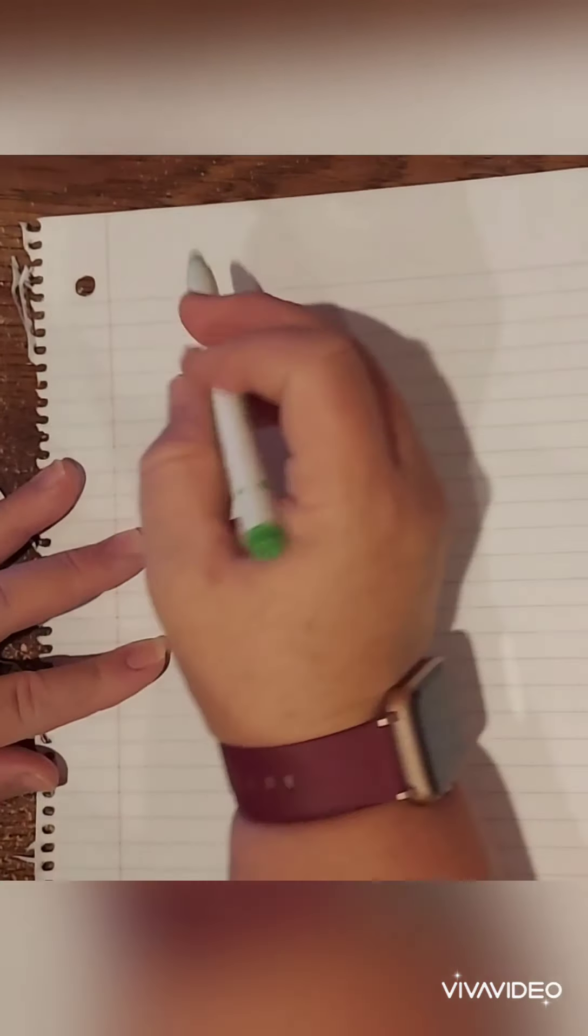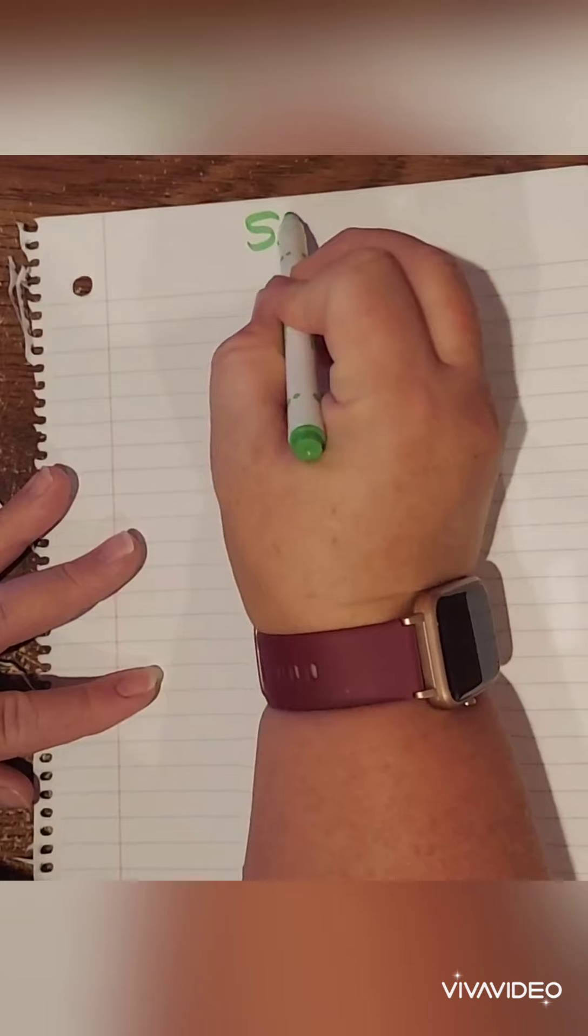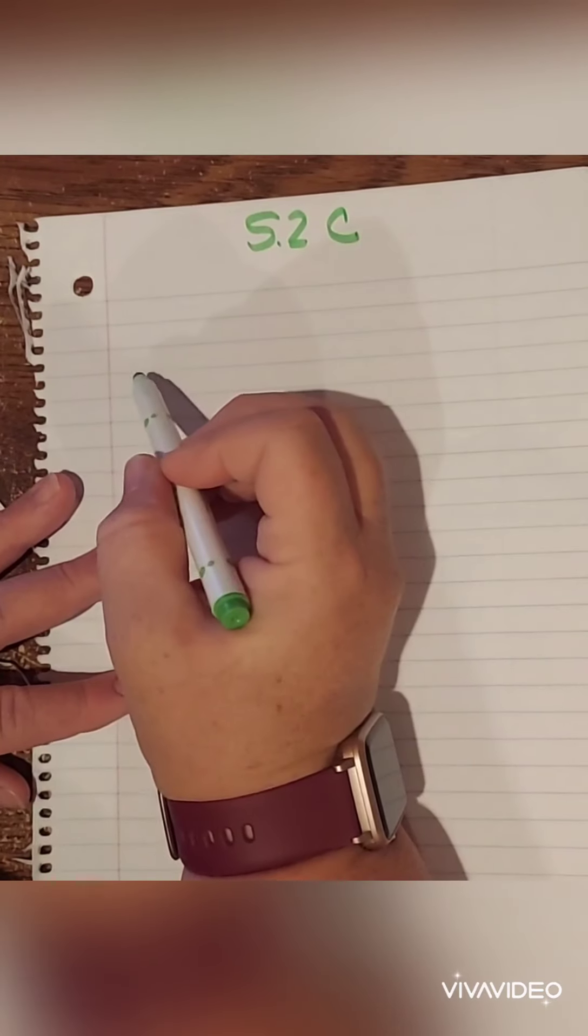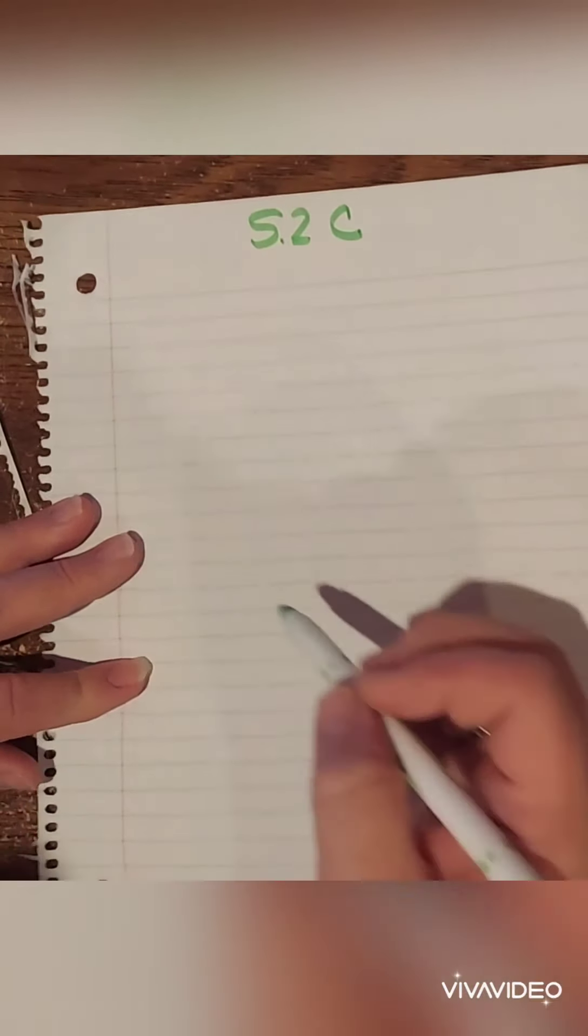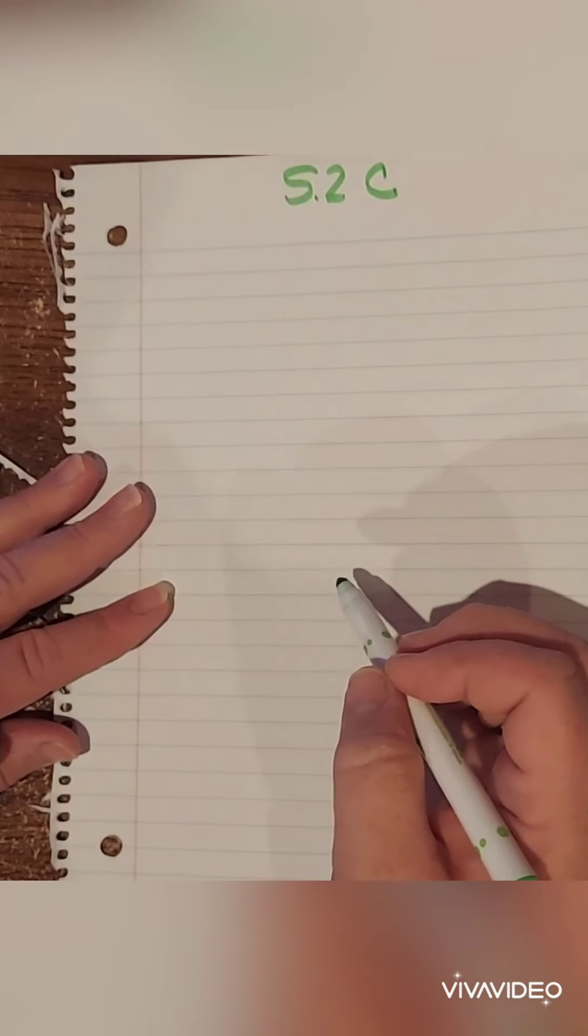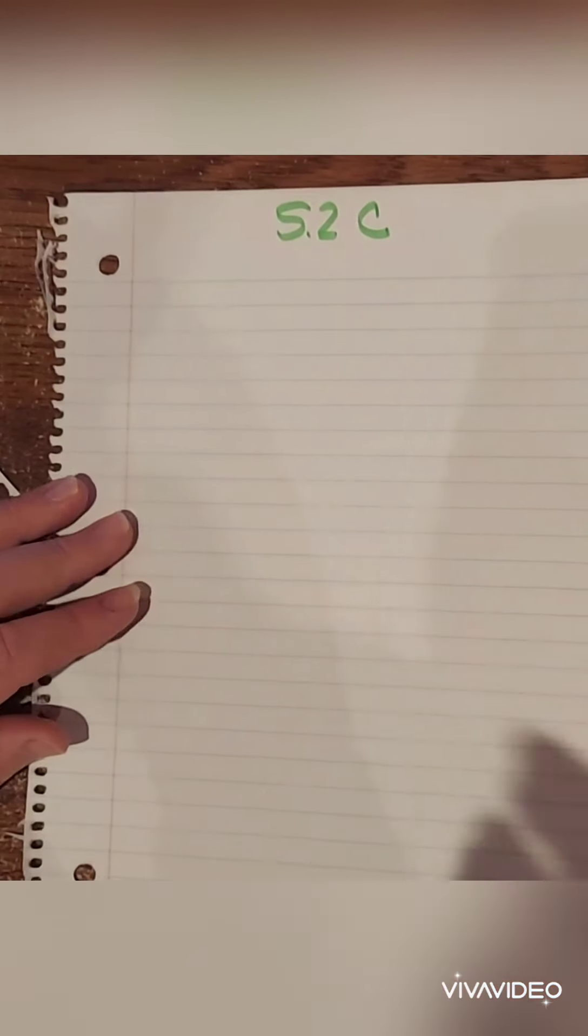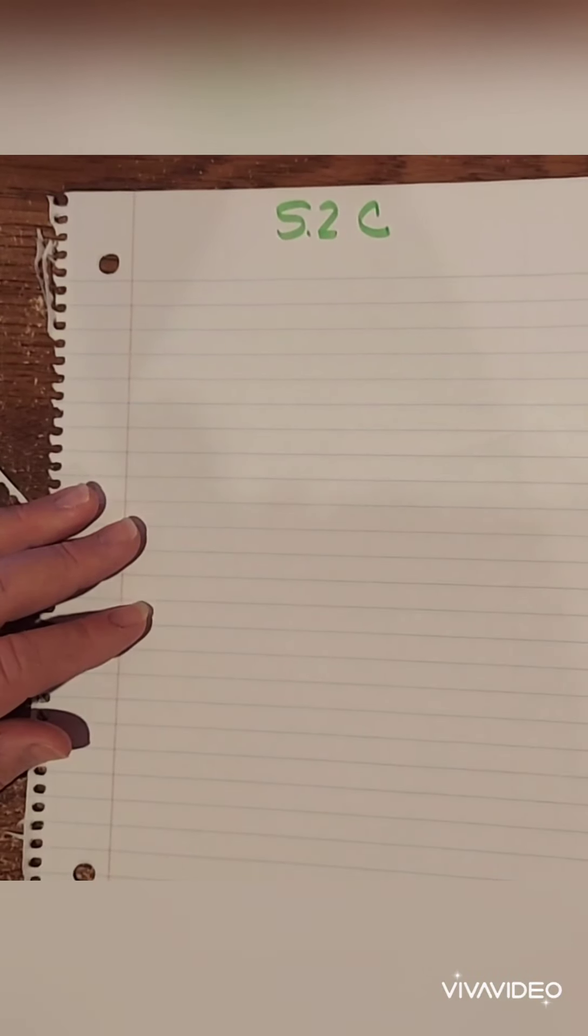This is the last part of this section. So we're going to call this 5.2 C. And this is radicals with numbers.